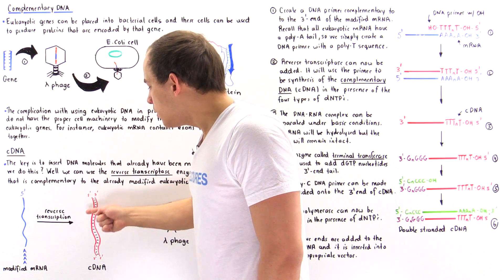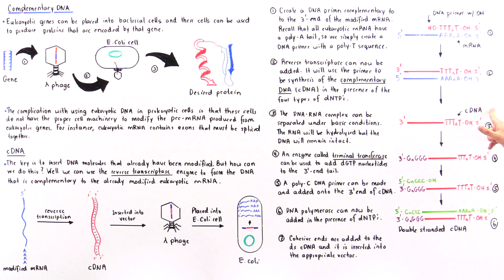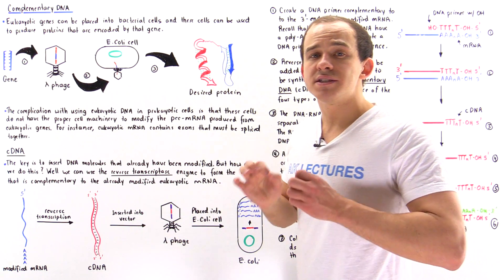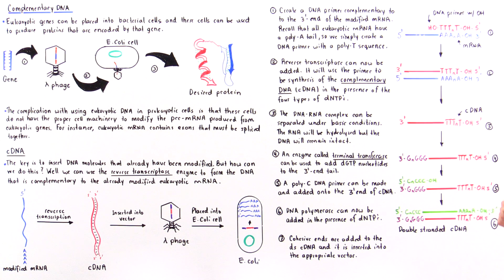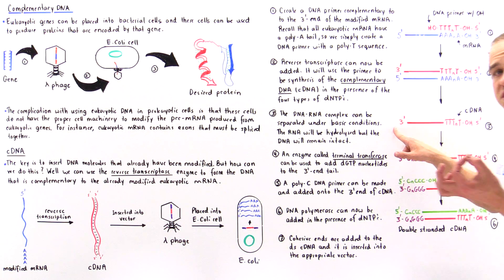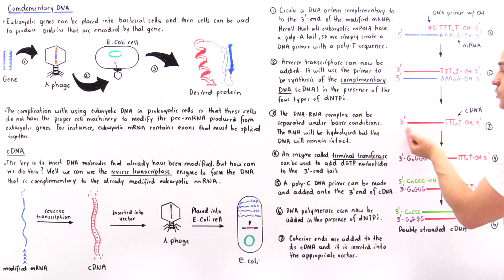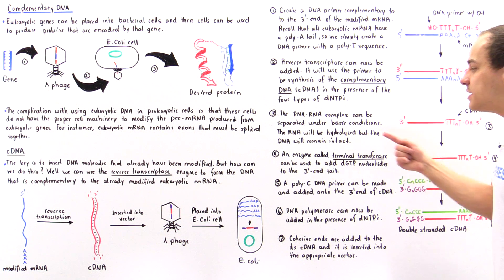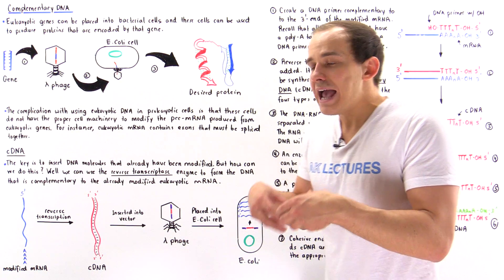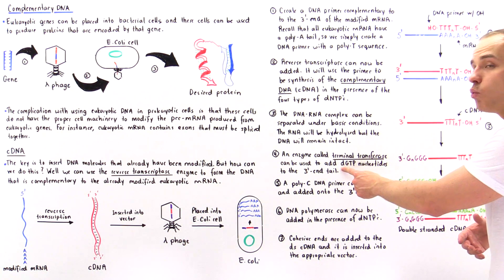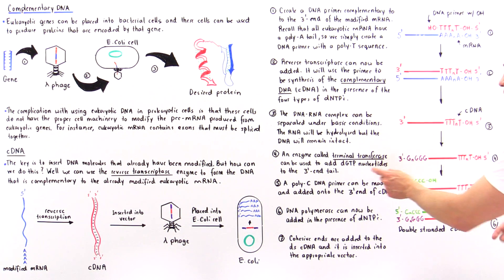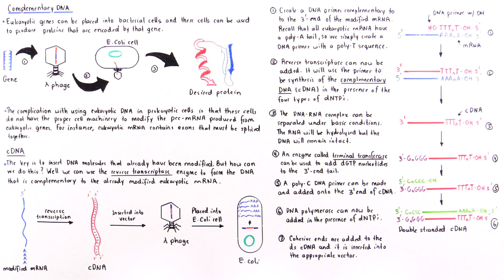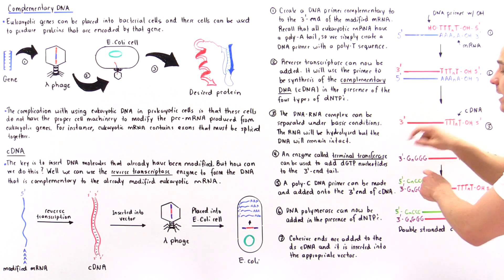The next step is to form the complementary strand to this cDNA molecule. Before we add DNA polymerase to synthesize the complementary strand, we have to create a primer. The problem is we don't know the sequence at this end, so we use a special enzyme called terminal transferase that adds a specific sequence of nucleotides onto the 3' end. For example, we can add a bunch of deoxyguanosine triphosphates (dGTPs). After step 4, we have added a poly-G tail to the 3' end of the complementary DNA molecule, so now we know exactly what the sequence at the 3' end is.